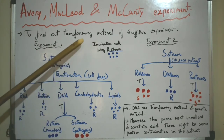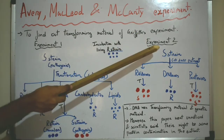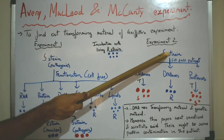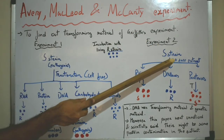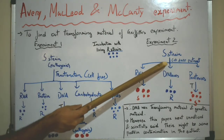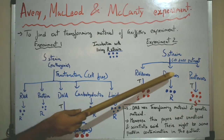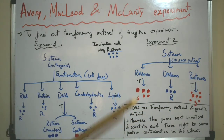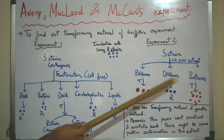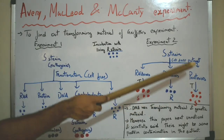Only DNA was able to transform the harmless R-strain into the pathogenic S-strain. This suggests that DNA was the transforming material and also the genetic material. In the second experiment, what they did was they lysed the S-strain pathogenic cells, generated a cell-free extract, and then incubated it with different enzymes like RNase, DNase, and proteases. These enzymes cleave RNA, DNA, and protein respectively in the extract.